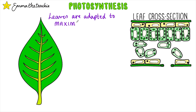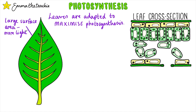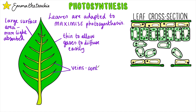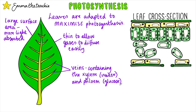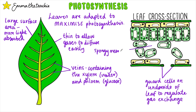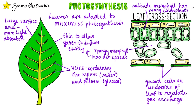Leaves are adapted to maximize the amount of photosynthesis that can take place. Their shape gives them a large surface area to absorb more light. They're thin to allow gases to diffuse in and out easily. They have veins which contain the xylem to transport water and the phloem to transport glucose — it's important that glucose can move down to the roots as they can't make their own. They also have lots of guard cells on the underside to regulate gas exchange. The spongy mesophyll has air spaces to allow gases to diffuse easily, and finally, the palisade mesophyll tissue has many chloroplasts to maximize photosynthesis.